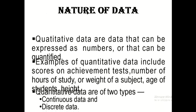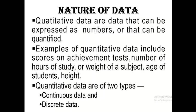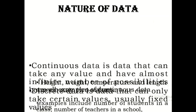Quantitative data, or numeric data, is data that can be expressed as numbers or that can be quantified. Examples of quantitative data include the number of hours used in study, the weight of a subject, the age of students, and height. As mentioned earlier, quantitative data can be classified into two types: continuous data and discrete data.